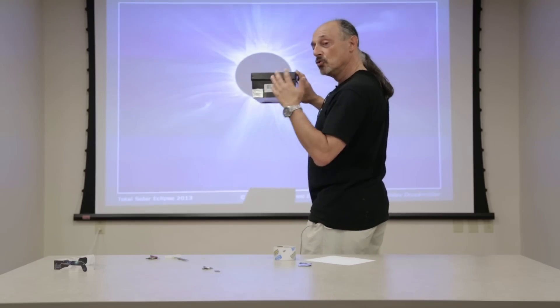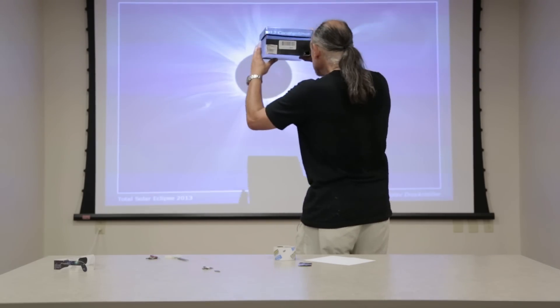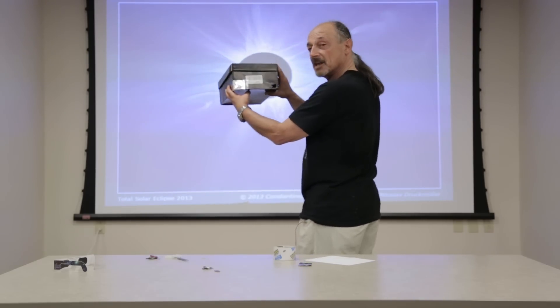Then, as the moon transits in front of the sun during the eclipse, you will be able to see the silhouette of the moon passing from right to left in front of the sun.